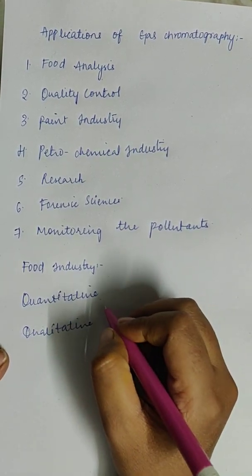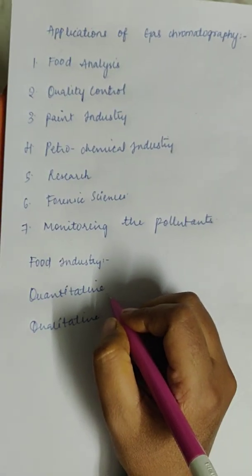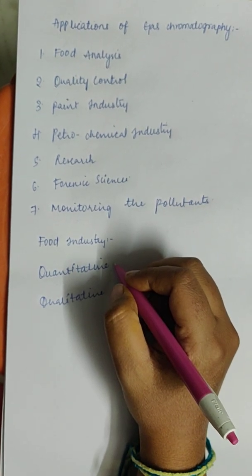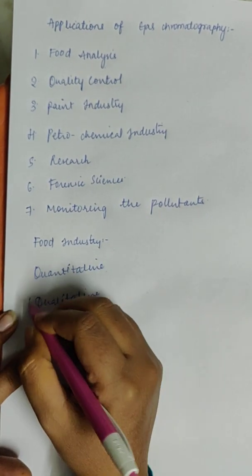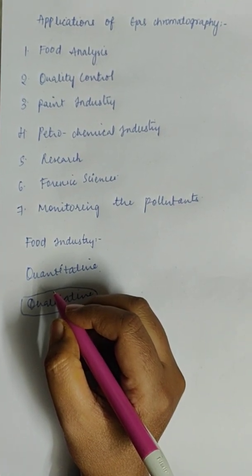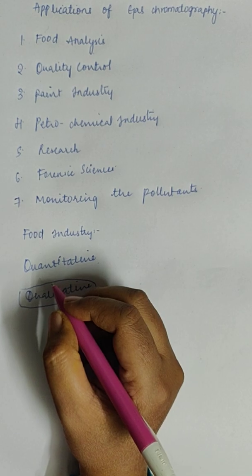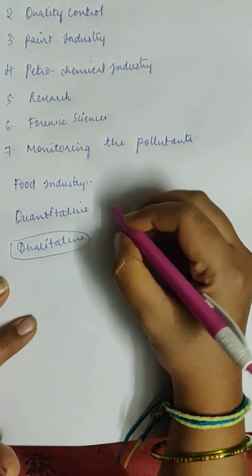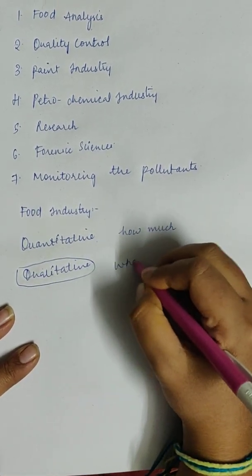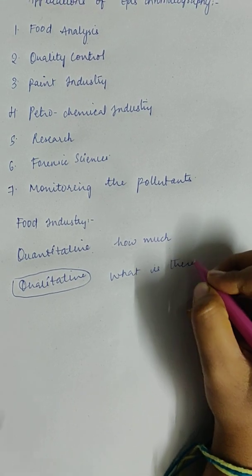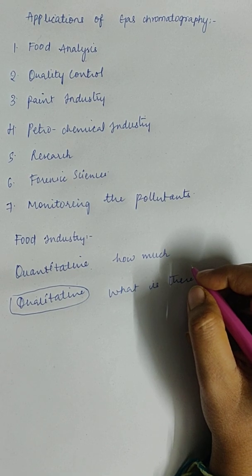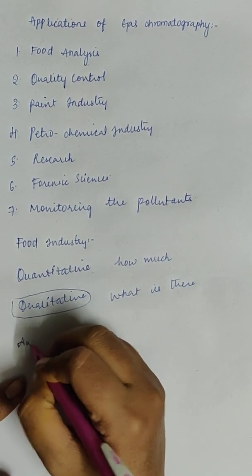Quantitative means if you want to know the amount or concentration of something — you already know the component, you just want to know the quantity. Qualitative means you don't know the component; you want to know the type of constituent present. So it analyzes food additives as well.